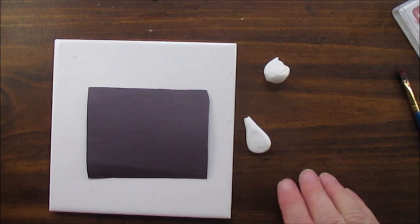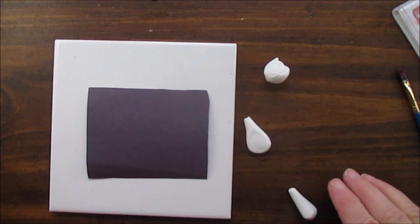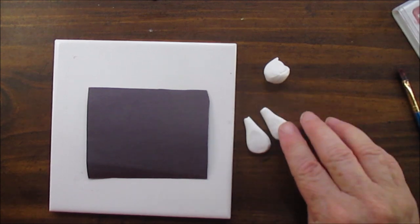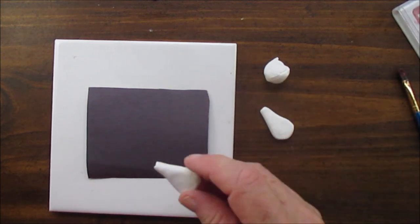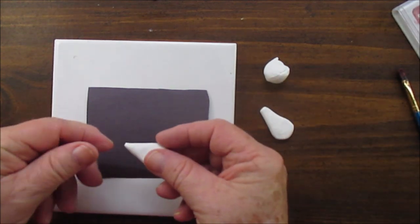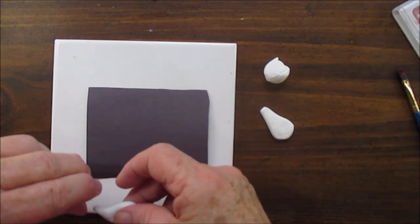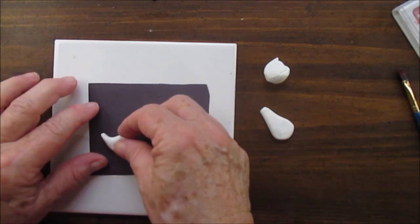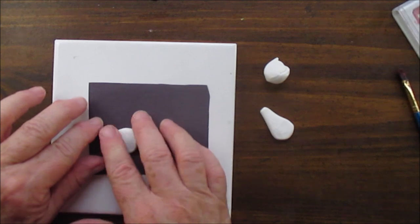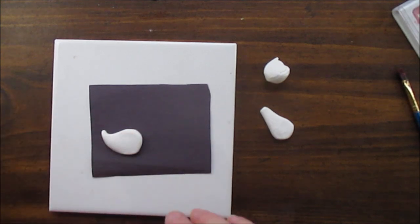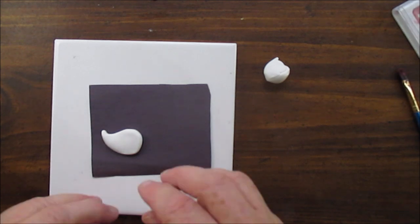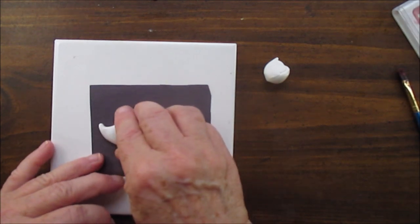We're going to put it on the paper. Now someone asked me in the comments how I bake my ornaments. I just bake them right on the little sheet of paper that I make them on, put it on a cookie sheet, and stick them in the oven and bake them.